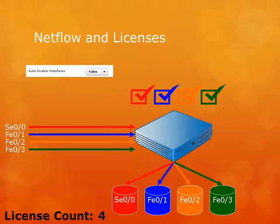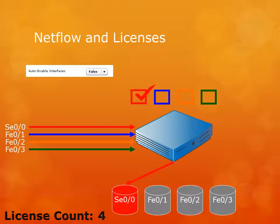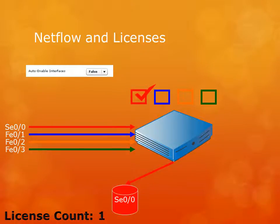The other option is to set auto-enable interfaces to false. In this case, as the administrator you can go in and choose which interfaces you want to report on. We still flow from all four interfaces because we still need the outbound picture for Serial 00. But I can choose to only check the Serial 00 interface. When I do that, records for Fast Ethernet 01, 02, and 03 go stale and are no longer updated. However, records in the database equal license count — so we're still using four licenses. We can go to the Reporter Analyzer Administration webpage and delete those interfaces from the database, which brings our license count back to one and frees up those licenses.